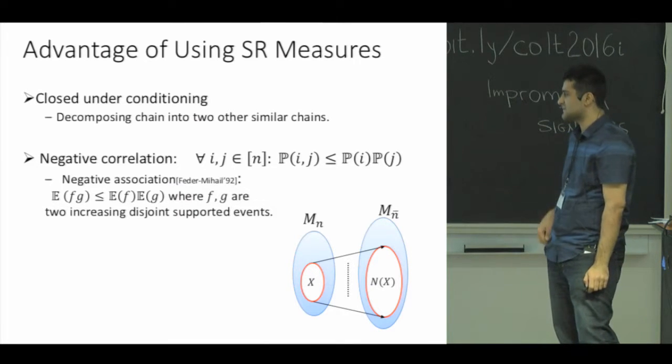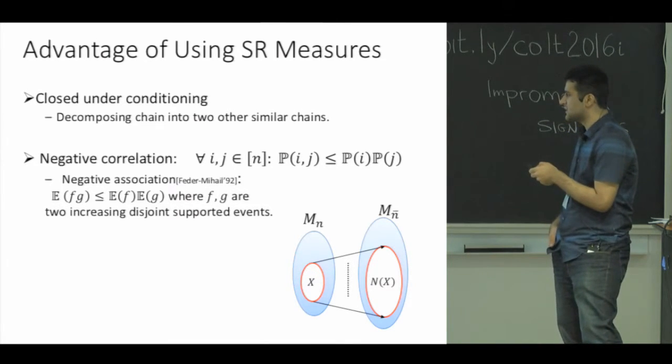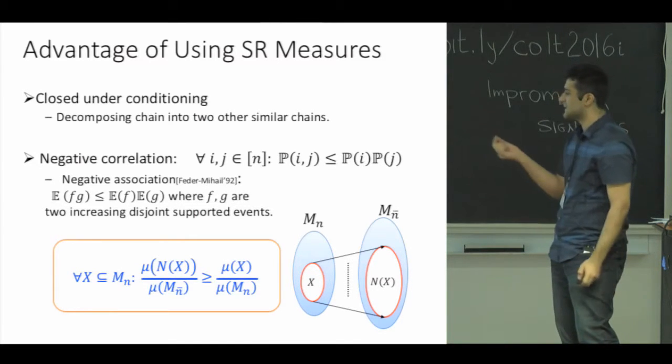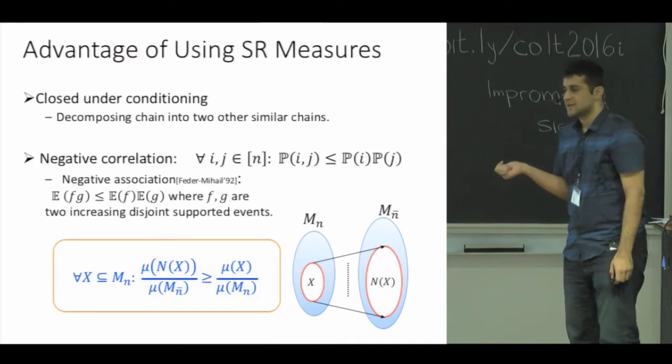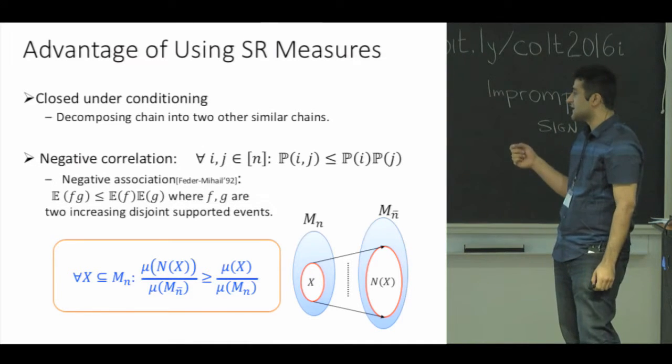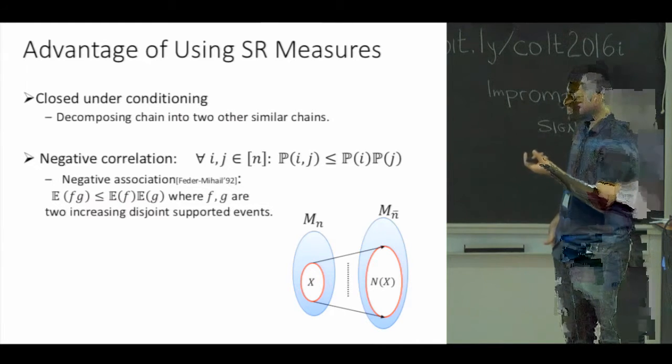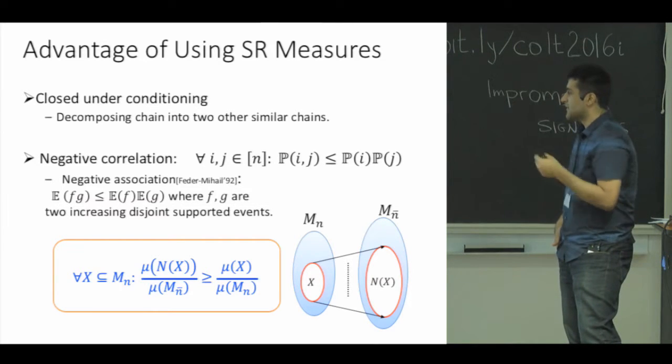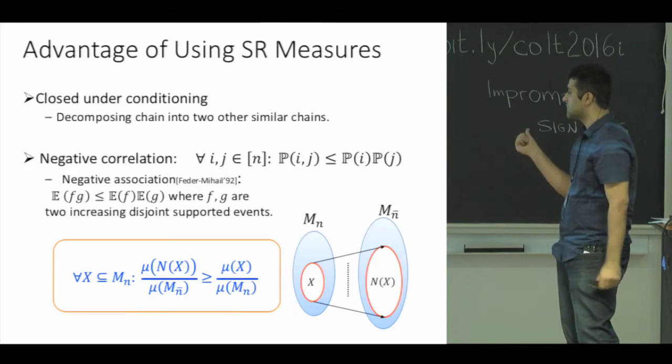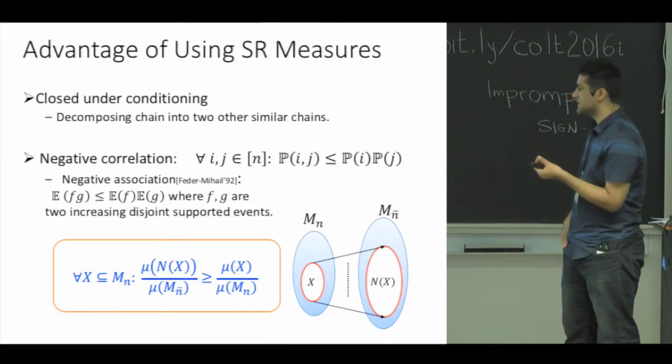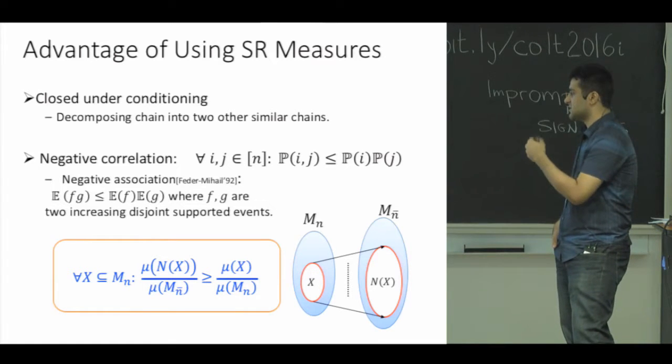Feder and Mihail use this property to analyze a chain which can be seen as an unweighted version of our problem, but we use it to get this relation which provides the expansion property that we want. It says that for any subset X from one of these parts, the ratio of the probability of a neighbor of X in the other part to the probability of the other part is at least the ratio of the probability of X to the part which X is contained in.